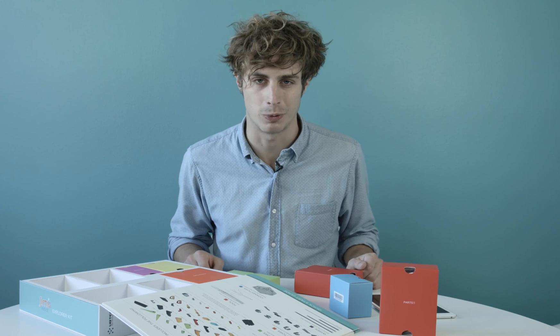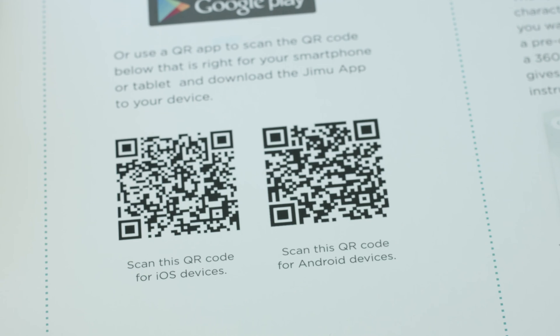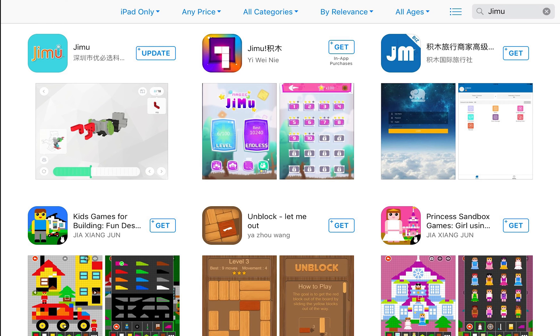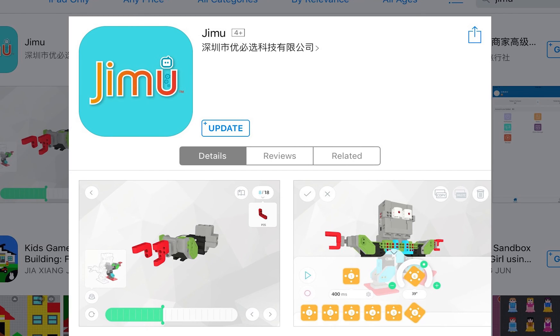Now it's time to build our robot. Start by scanning the QR code or search Jimu in the Google Play Store or Apple App Store to download the free Jimu app to your smartphone or tablet.